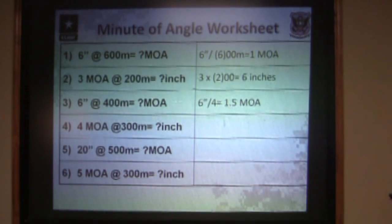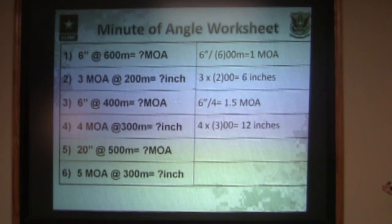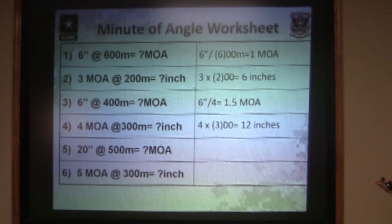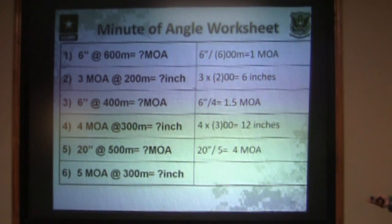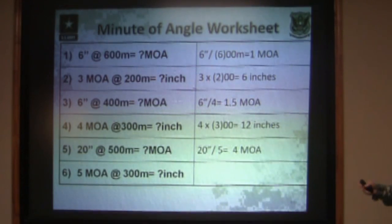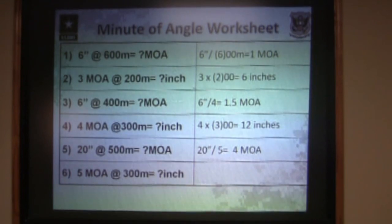Four MOA at 300 meters: take four, multiply it times your three of your 300 meters, and it gives you 12 inches. Twenty inches at 500 meters is how many minutes of angle? Twenty inches divided by the five of your distance gives you four minutes of angle. So if you need to move your shot 20 inches at 500 meters to account for wind or elevation, you need to move your sights four minutes of angle.